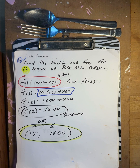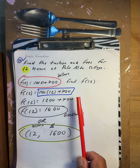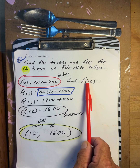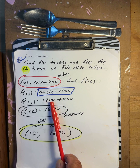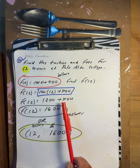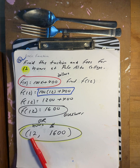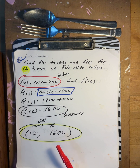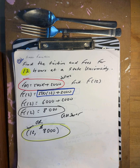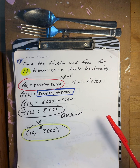Find the tuition and fees for 12 hours at Policy College. f of 12: 12 times 100 is 1200, plus fees of 400 gives $1600. So 12 credit hours at Policy College costs $1,600.